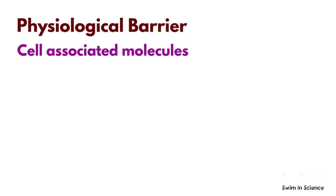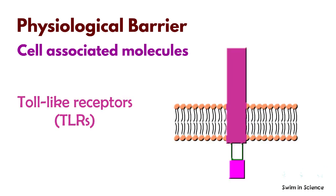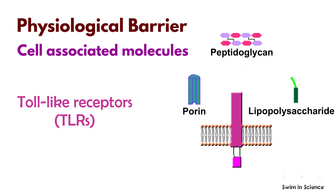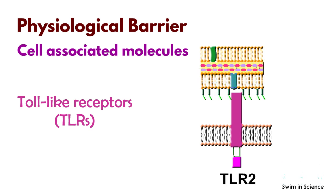The main cell-associated molecules are toll-like receptors. These are membrane-spanning receptors usually expressed on immune cells. They recognize structurally conserved molecules derived from microbes. An example is TLR2, which recognizes the lipopolysaccharide found in the cell wall of gram-negative bacteria and helps in the elimination of bacteria.